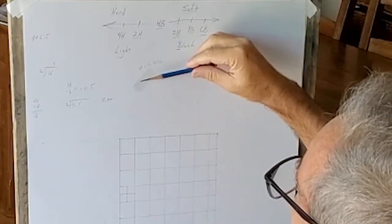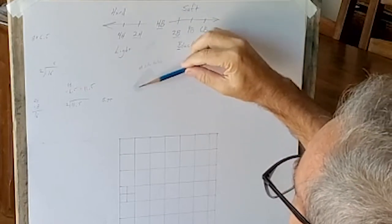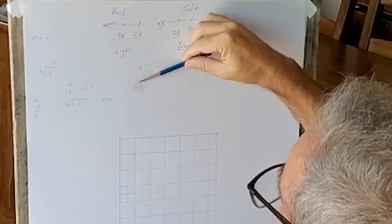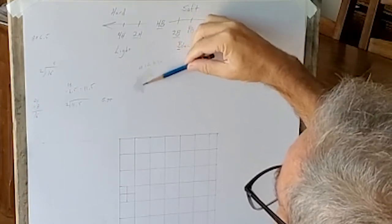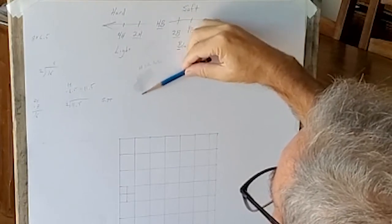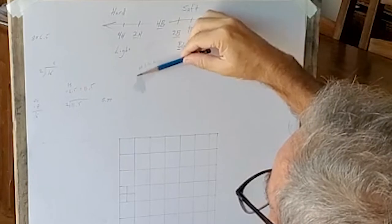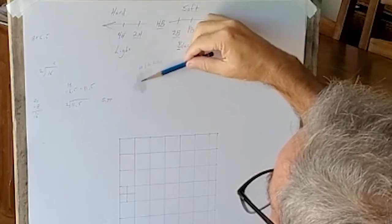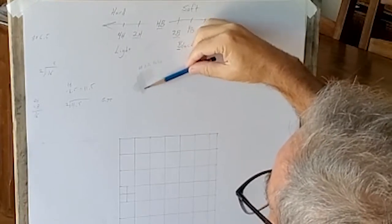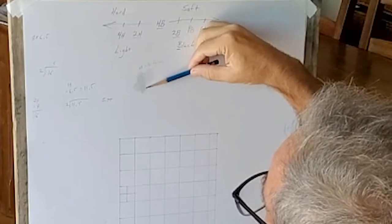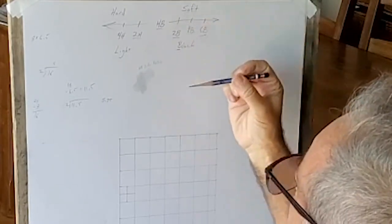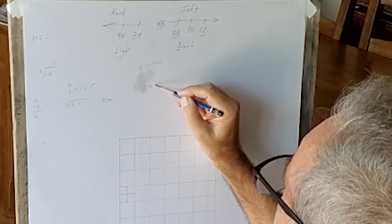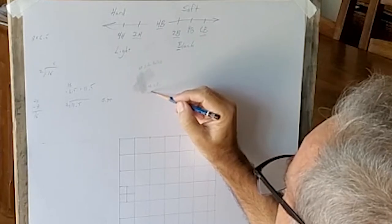Then we're going to go on top of this, changing direction. By changing direction, you can see that we get a shade darker. So that would be HB side crosshatch.